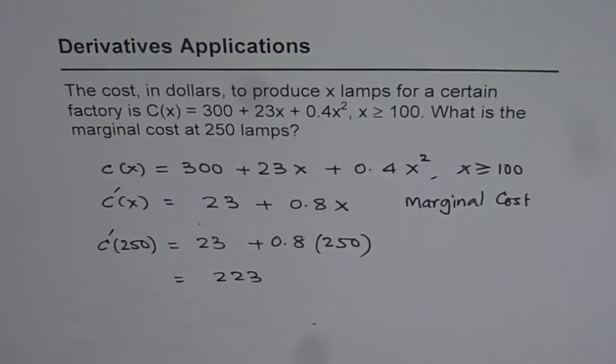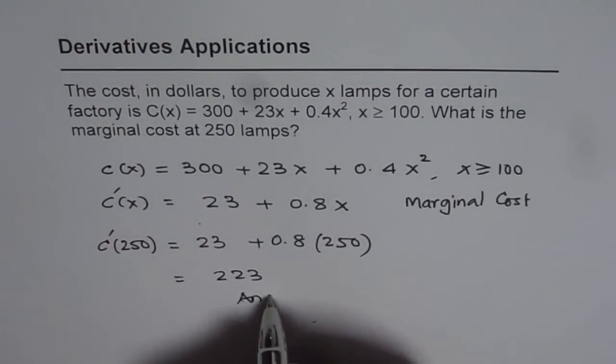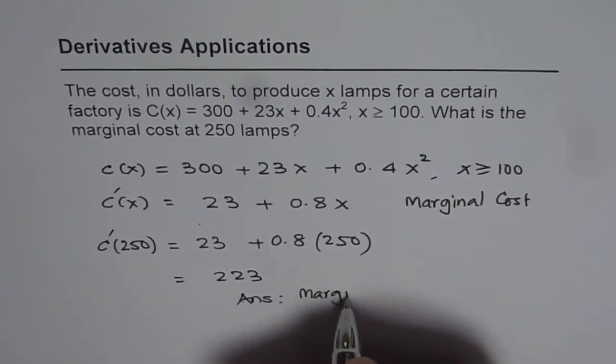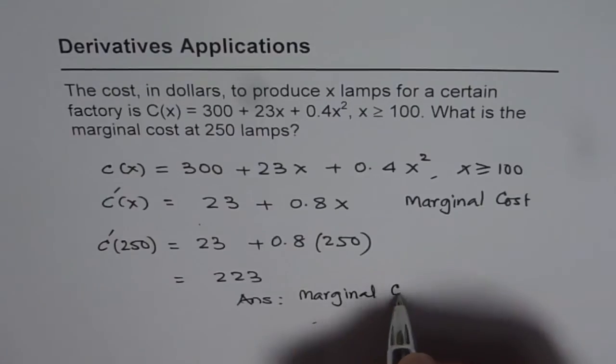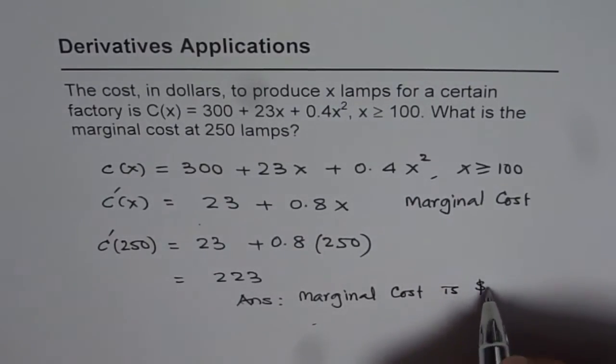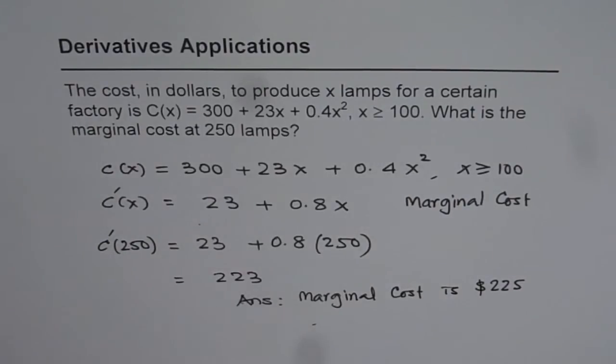Since the cost is in dollars, our answer is that the marginal cost is $223 at 250 lamps. So when you are producing 250 lamps, then one more lamp will cost us $225. That is what it means. Thank you.